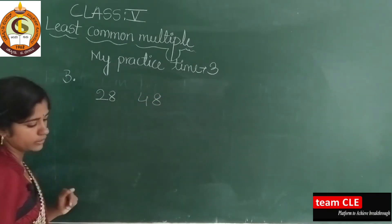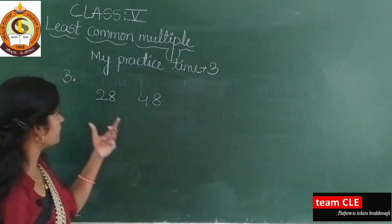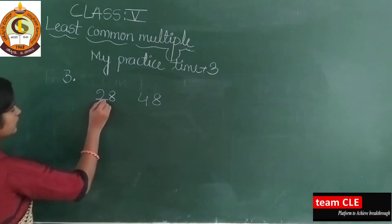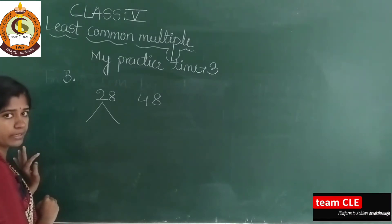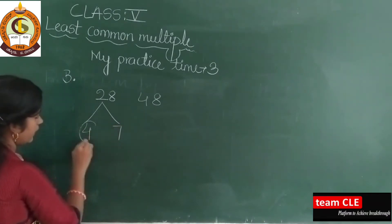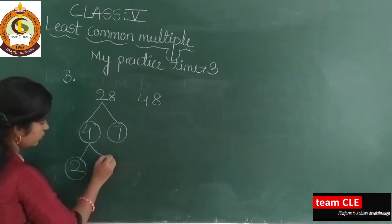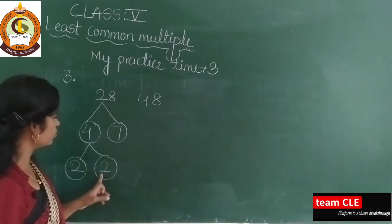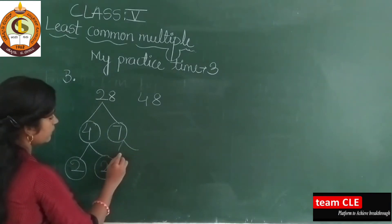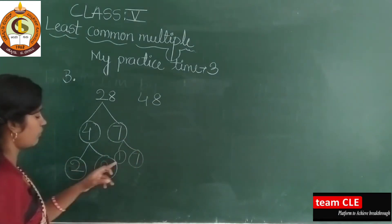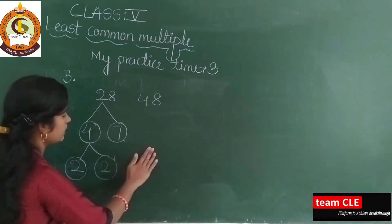Dear students, you already know the tree method. If you know the tree method, you can solve this example. So 28 and 48 are there. Take 28 — it is in the 7 times table: 4 sevens are 28. Stop here and split 4: 2 twos are 4. So I got prime numbers: 2, 2, 7. 7 you keep as it is because 1 sevens are 7 — if you get a prime number then you stop there.